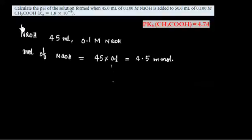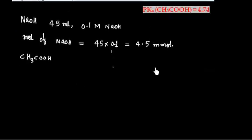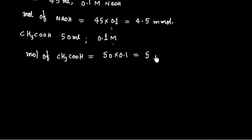We have been also given acetic acid, and this is 50 mL and 0.1 M, so we can calculate mole of acetic acid. That is 50 into 0.1, so we will have 5 mmol.